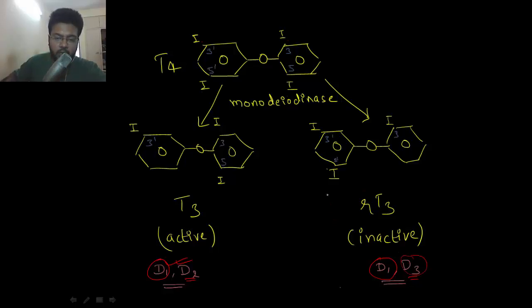In short, D1 monodeiodinase can form T3 and reverse T3. D2 monodeiodinase can remove iodine from the 5-dash position only—that means it can form only the active form of thyroid hormone. D3 is the main enzyme to inactivate the thyroid hormone, that is T4.